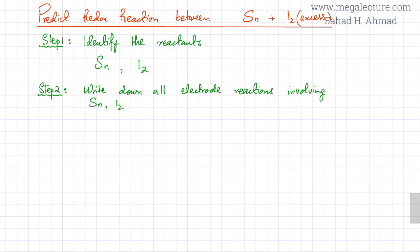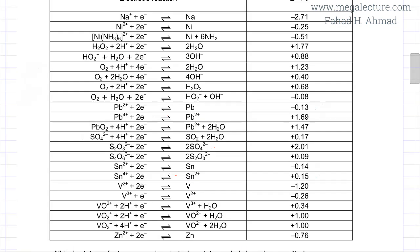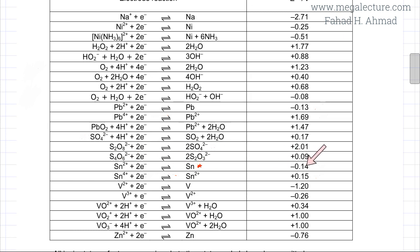Step 2 is that we need to write down all electrode reactions that involve tin and iodine. For that, I need to open the data booklet where all the electrode reactions are given. I also need to write down the electrode potentials of those particular reactions. Here I have opened the data booklet where all the electrode potentials and electrode reactions are given.